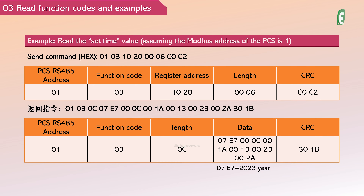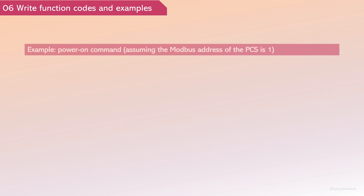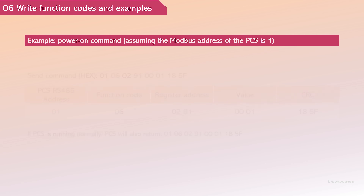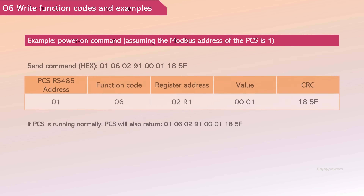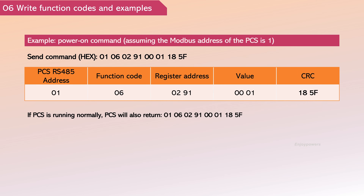After receiving the command, the PCS replies with information containing the byte length and values. Furthermore, the PCS communication protocol also supports standard function code 06 write commands. For instance, writing 1 to register address 0x0291 means issuing a startup command to the PCS.